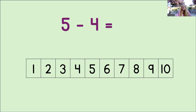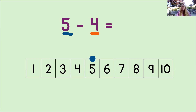Let's try another one. First, we look at the minuend or the first number in the equation. And that's the number 5. Then we mark the number line with that number. Next, we look at the subtrahend. That's the number 4. Do you remember what to do now? Yes, you count back 4 to subtract.